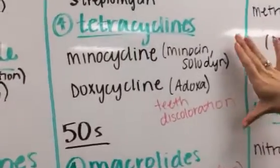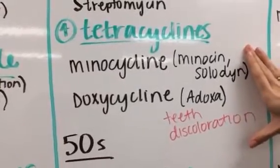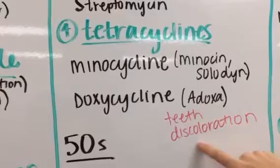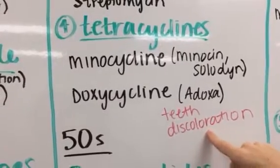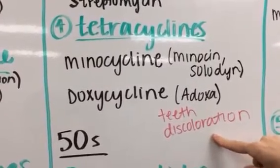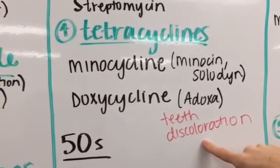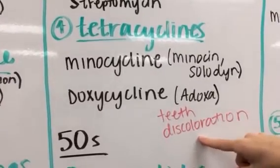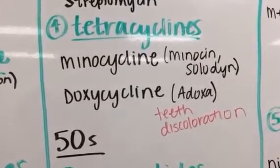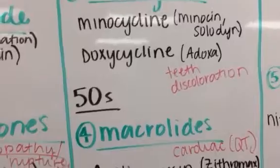Also at the 30S subunit, we have the tetracyclines — specifically minocycline and doxycycline. The main side effect to focus on here is teeth discoloration. We avoid these in younger children because during development they can cause gray tooth syndrome, which can affect them for the rest of their lives.